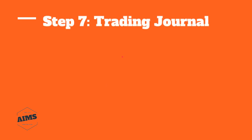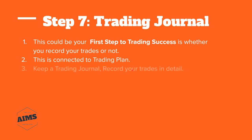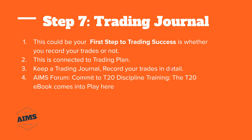Step seven: the trading journal. This could be placed right after the trading plan — it could even be your very first step to trading success. Trading success depends on whether you record your trades or not. Keep a trading journal and record your trades in detail. There are templates in the forum where you can find a particular format to follow.